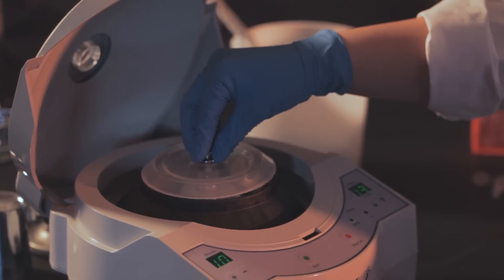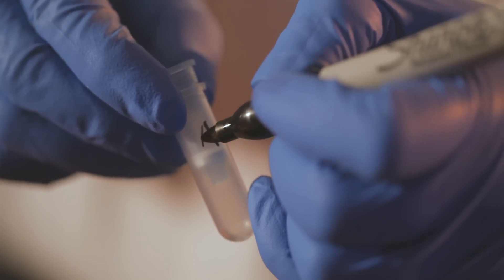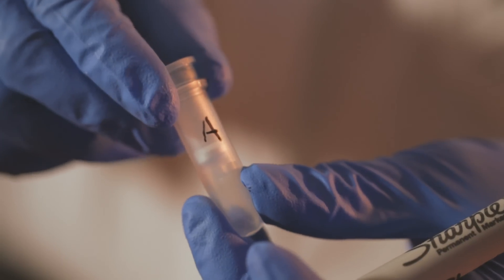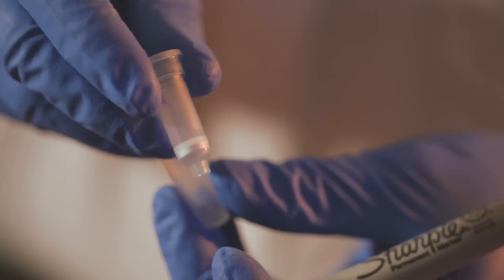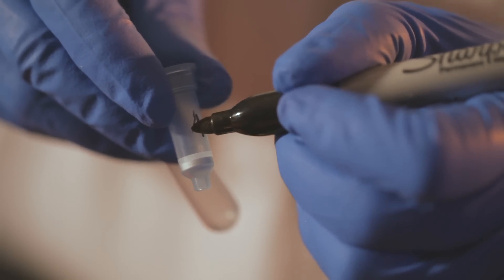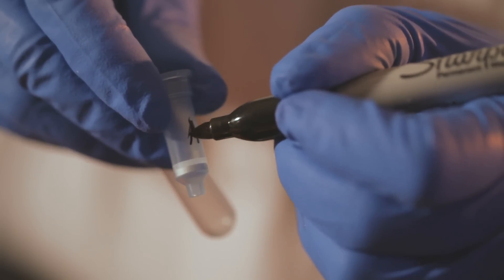While your samples are centrifuging, label one spin column for each culture you started with. Each spin column consists of the column set inside an empty collecting tube. Label both the collecting tube and the spin column.